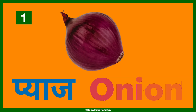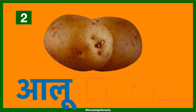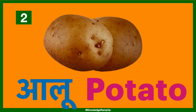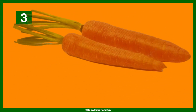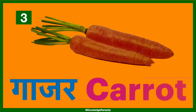Pyaaj — this is called onion in English. Aloo — this is called potato in English. Gajar — is carrot in English.